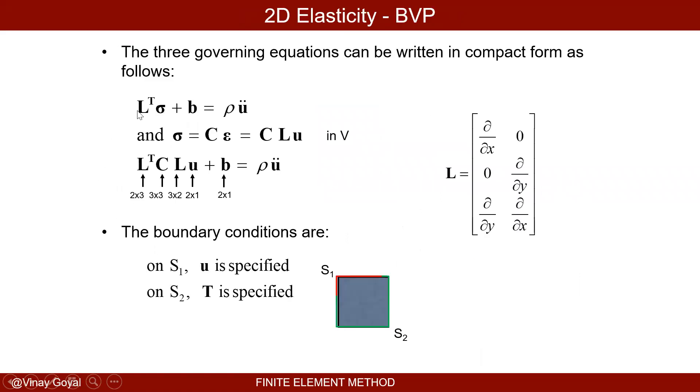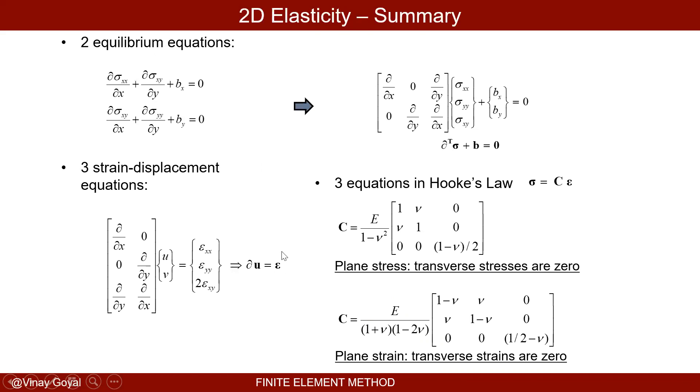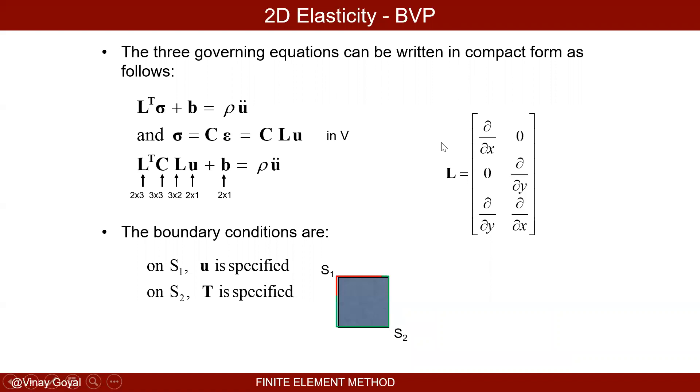I'm ready here to plug in just like I had before. Sigma bold is c bold times epsilon bold, and epsilon bold is L bold times u bold. We got that from here. And again here I'm using partial, here using L bold but they're the same thing. I'm ready now to plug it in. So sigma bold is c L bold u bold. I can plug this in here and now I have my two equations, two unknowns are u and v.